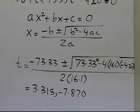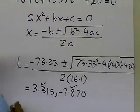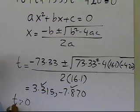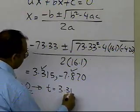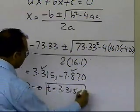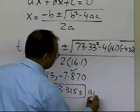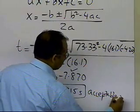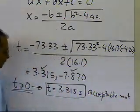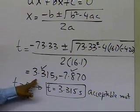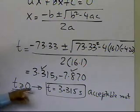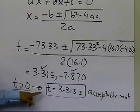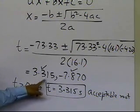From the physics of the problem, we have to choose which root is the right answer. Since we are talking about time, t must be greater than or equal to 0, so the acceptable root is 3.315 seconds. The root −7.870 is not acceptable because time cannot be negative, making 3.315 seconds the valid answer.